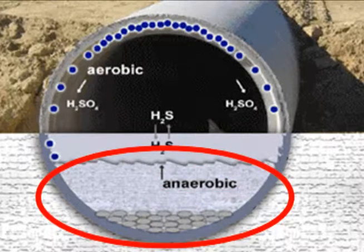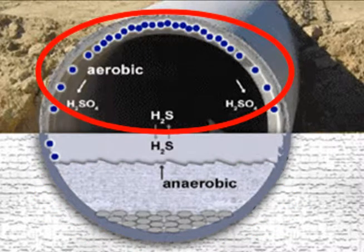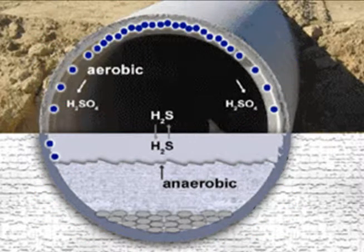The wet zone, which are the walls of the sewer in contact with the wastewater, and the vapor zone, or sewer atmosphere, which are the walls not in contact with the wastewater. In the wet zone, aerobic bacteria oxidize sulfide to sulfuric acid, leading to the corrosion of concrete walls and any metallic component within.